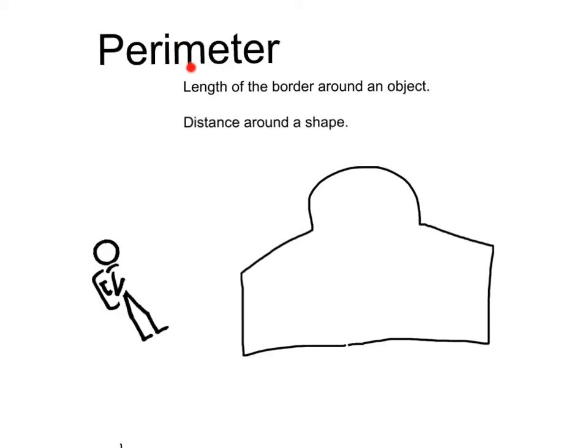When you hear the word perimeter, you should be thinking the length of the border around an object, or the distance around a shape. In other words, if you took an object or shape and walked all the way around it, measuring all the way, boom, and you took that length, that would be your perimeter.